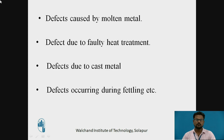Defects due to faulty heat treatment include: uncontrolled initial heating operations may cause cracking of brittle castings; careless stacking of castings while they are in a semi-plastic state at heat treatment temperature tends to cause distortion; and fast cooling rates may develop cracks in the casting. Defects due to cast metal include hard spots, which occur in grey iron castings having insufficient silicon content — hard spots make machining of the casting difficult.